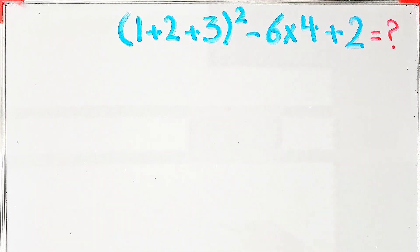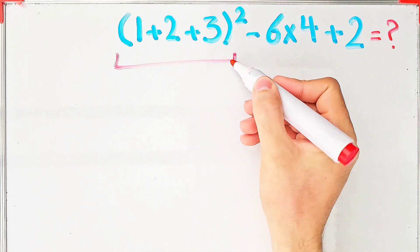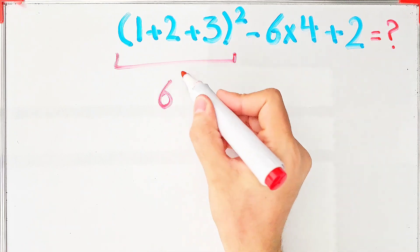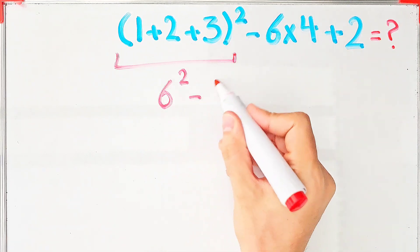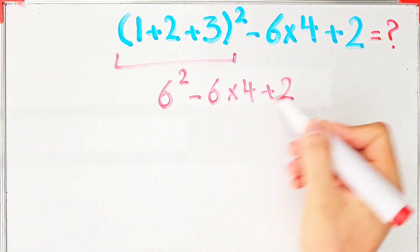In the wrong way of solving this question, some people solve this question like this: 6^2 - 6×4 + 2. Again, they start from the left and simplify the question.